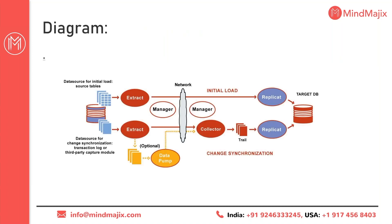In this architecture diagram, we can understand the overall picture of GoldenGate architecture. The components we can see include: extract, manager, collector, data pump, trail files, replicate, initial load, and change capture. These are the key terms visible in the diagram that we will cover.